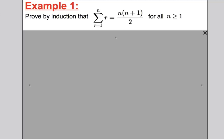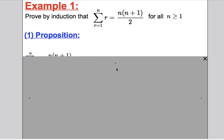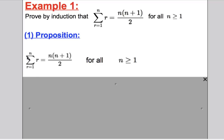Here's example 1. We are going to prove by induction that the sum from r = 1 to n of r equals n(n+1)/2 for all n ≥ 1. We're not going to check it for n = 1, 2, 3, 4, 5 and say it must be true — we need to prove it's true. The first step is the proposition: you write it down, copying out the question. You are trying to prove that the sum from r = 1 to n of r equals n(n+1)/2 for all n ≥ 1.